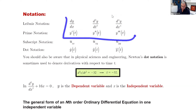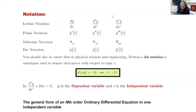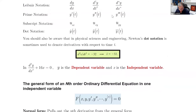We're mostly going to be dealing with the first two notations. For example, acceleration is negative 32 feet per second squared — you can say acceleration is the second derivative of distance and write it as s'' = -32 using dot notation or prime notation. Now, in a differential equation like this, y is the dependent variable and x is the independent variable.